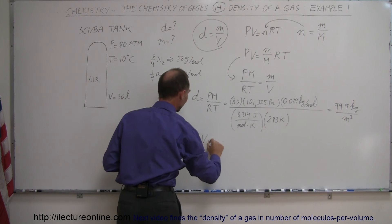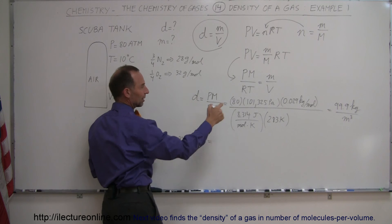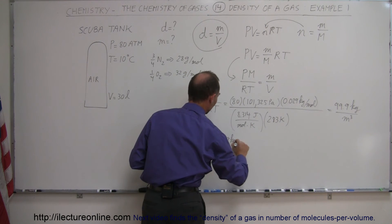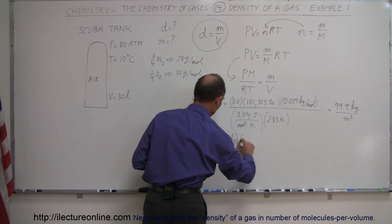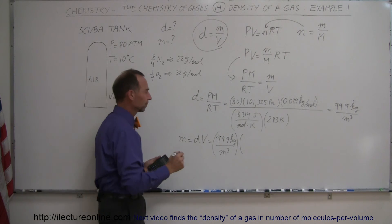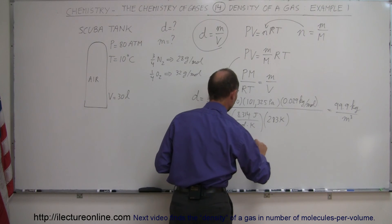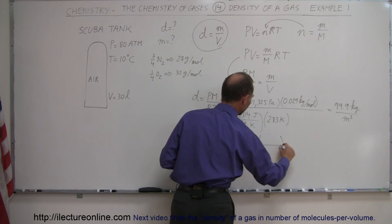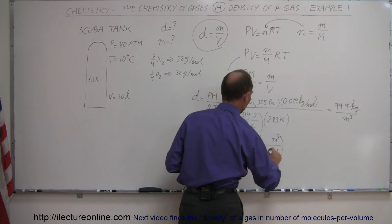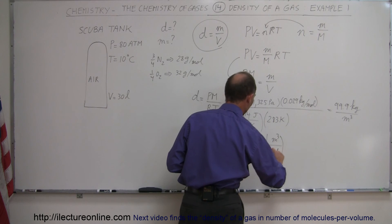So density times volume, we just got the density right here which is 99.9 kilograms per cubic meter. Now we have to multiply times the volume. Now the volume was expressed in liters, 30 liters, so now we have to convert from liters to cubic meters. So one cubic meter on top, liters at the bottom, one cubic meter is a thousand liters.